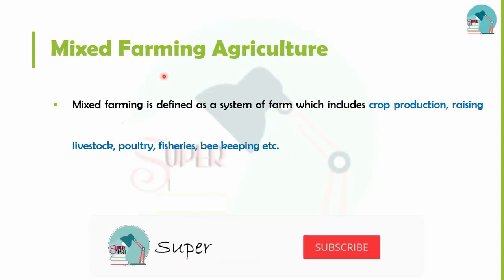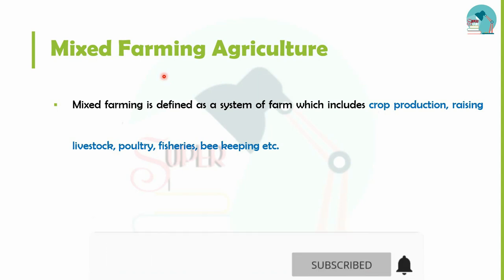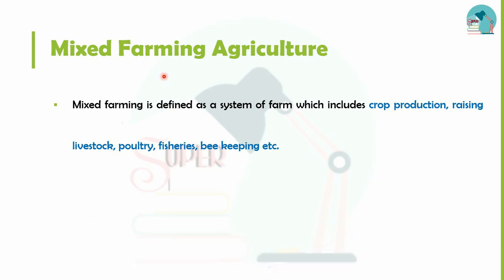Next is mixed farming agriculture. Mixed farming agriculture involves all forms of farming — like birds, fish, crops, and animals.